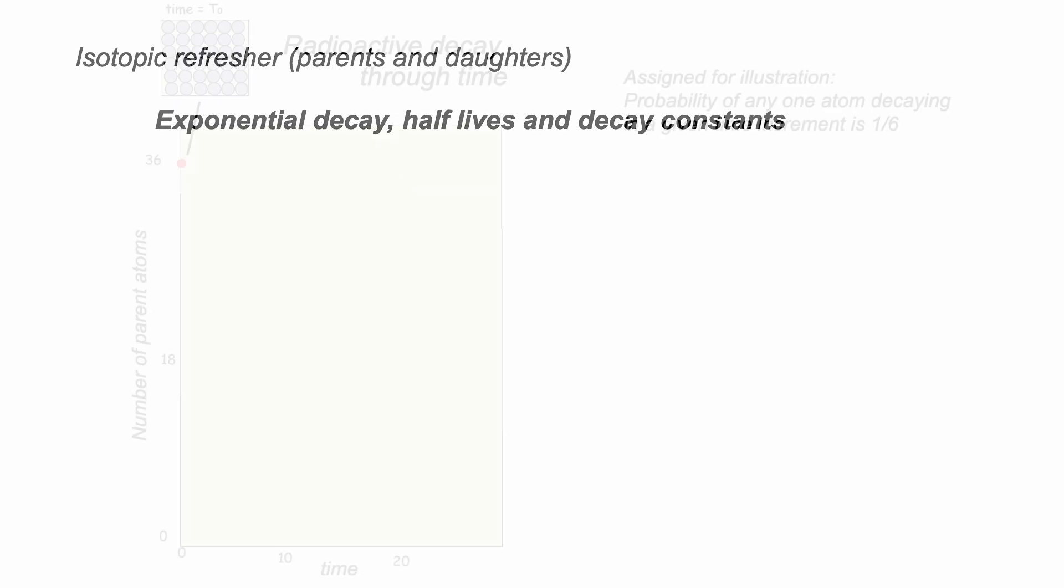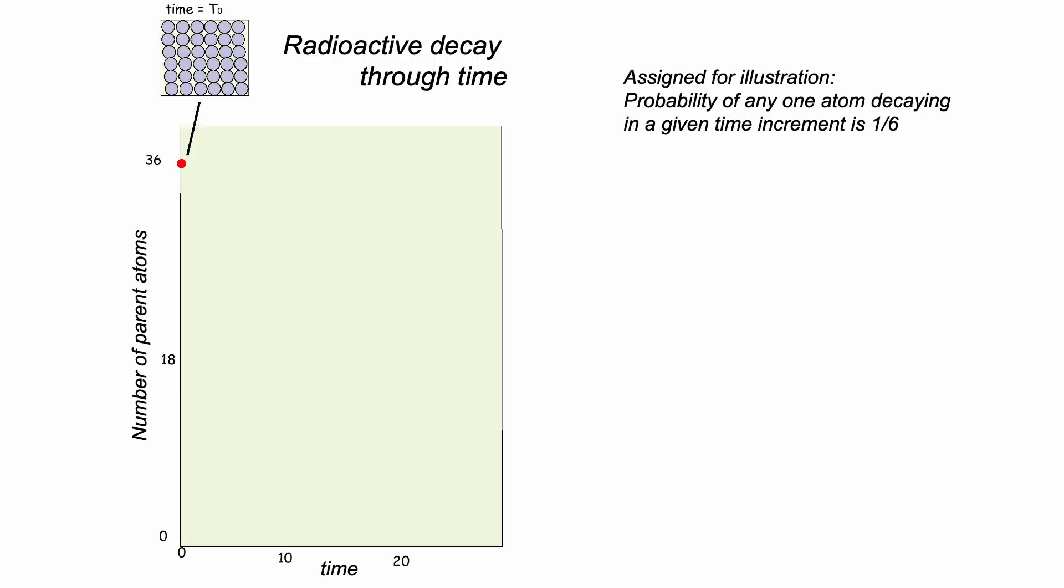It's about probability. In this illustration, we have a collection of our parent isotopes and at any increment of time, the probability of an individual isotope decaying is one sixth. So you can play along with a stack of dice. Let's let the experiment run.